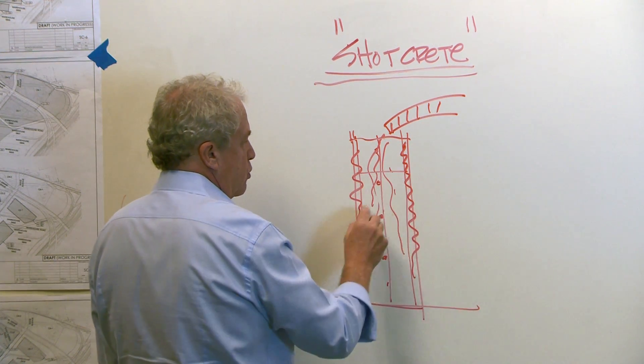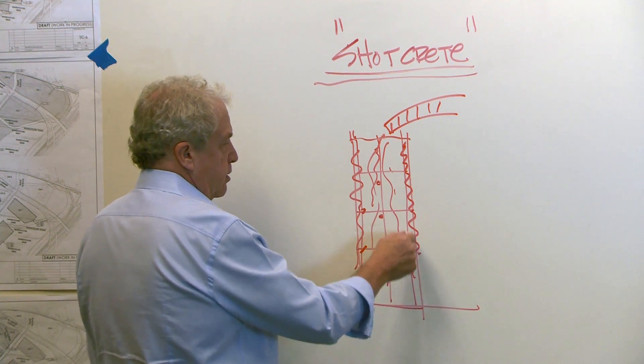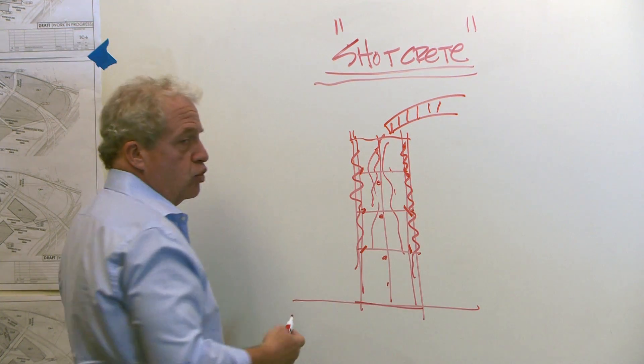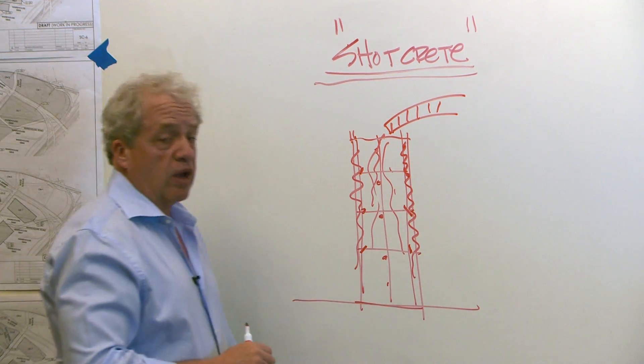The forms have ties going across to hold the forms together, which snap off. After the forms are removed and the ties stay inside the wall, don't hurt anything, and you have a concrete wall.